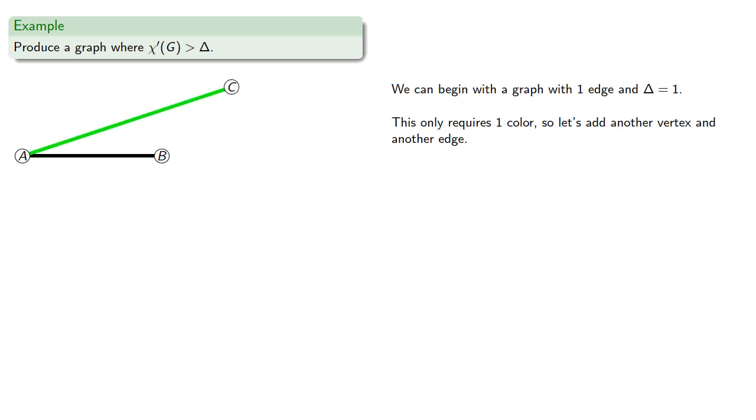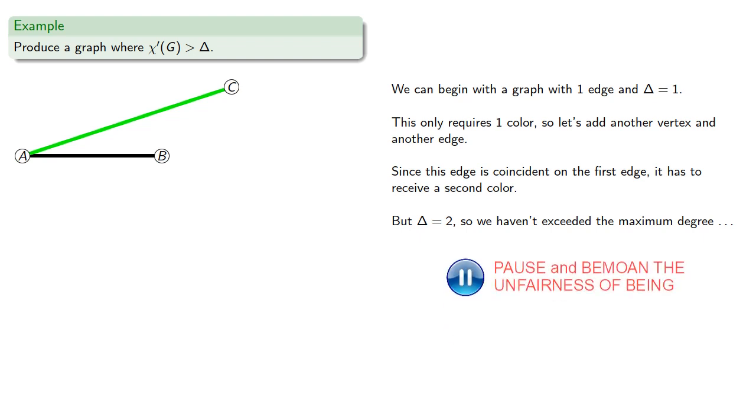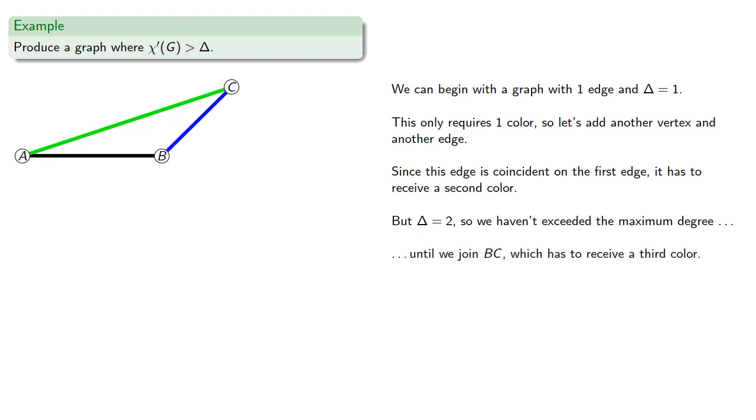Since this edge is coincident on the first edge—in other words, they both are incident on the same vertex—it has to receive a second color. But the maximum degree is 2, so we haven't exceeded the maximum degree until we join BC, which has to receive a third color. This gives us a graph where the maximum degree is 2, but the edge chromatic number is 3.